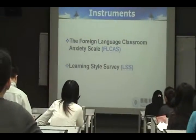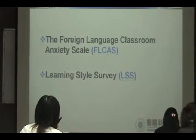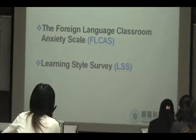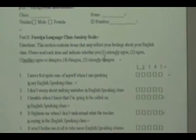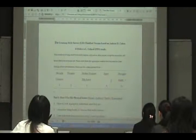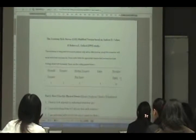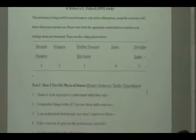The instruments to be applied in this study include the Foreign Language Classroom Anxiety Scale (FLCAS) and a learning style survey. The FLCAS contains 33 questions. The learning style survey is based on Oxford's model from 1993 and has four parts.